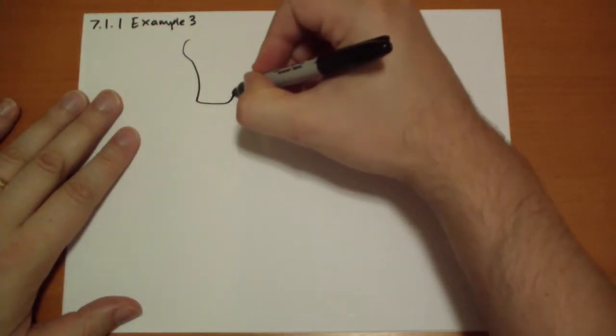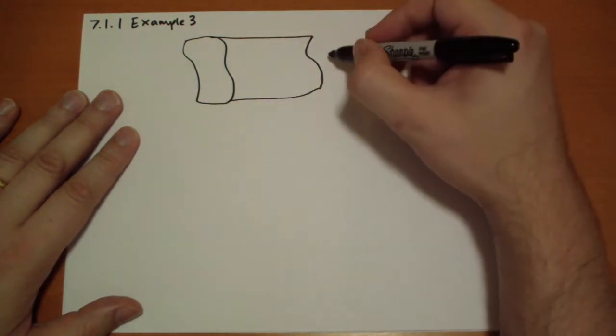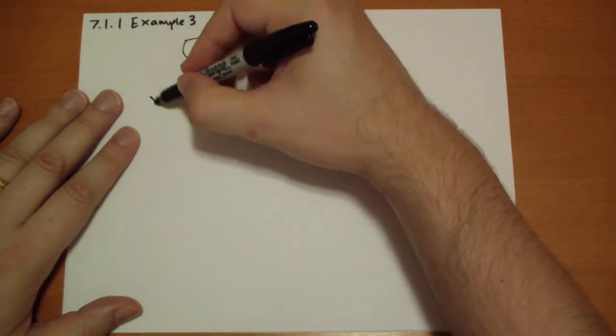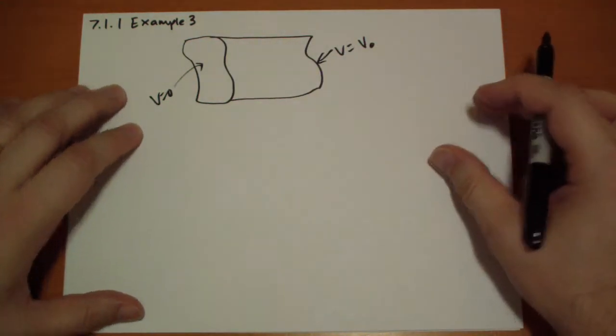So inside of that shape, let's draw that random shape again. So we have potential equals zero over here, and potential equals some potential over here.